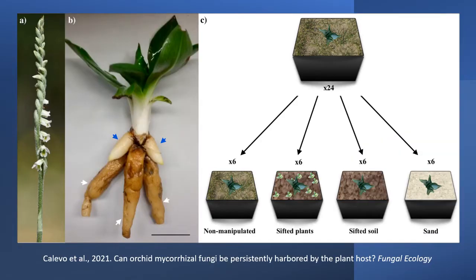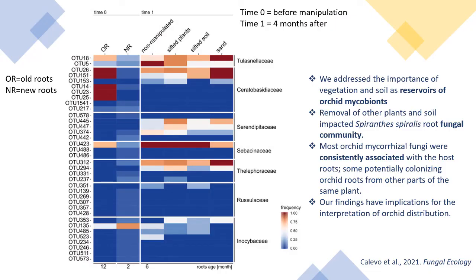We addressed the importance of vegetation and soil as a source of orchid mycorrhizal fungi with a manipulation experiment, in which we removed plants, or plants and soil, surrounding the widespread European orchid Spiranthes spiralis, at a time when both old roots and newly emerged uncolonized roots were present. We used a metabarcoding approach before and four months after the manipulation.